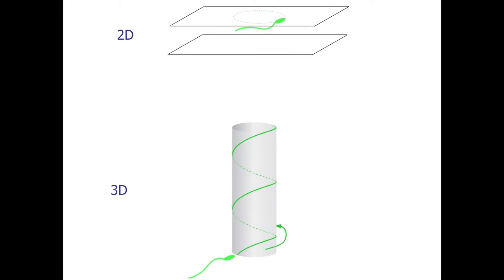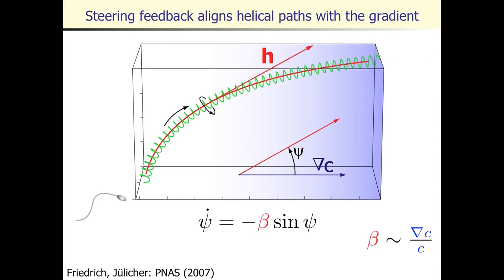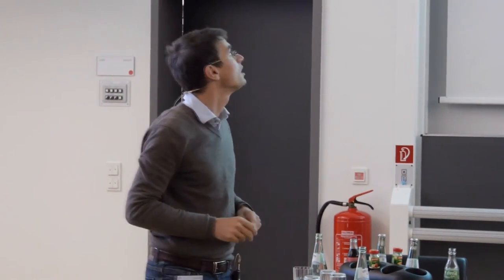Being theoreticians, we were bold and asked: what if exactly the same steering logic identified in 2D, which matches experiments, is also used in 3D? Using the same link between concentration stimulus and path curvature for a swimmer moving along a helical path, instead of drifting circles we find helical paths that bend. They bend in such a way that they align with the gradient direction, at a rate proportional to the strength of the gradient.